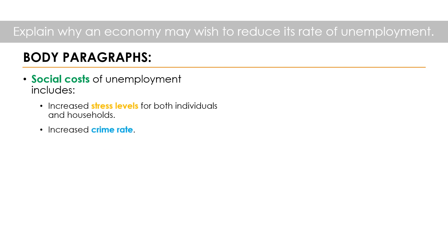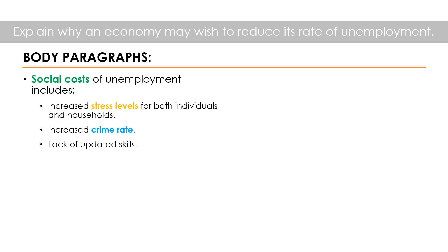A second social cost is an increase in crime rate. Given that a person or household has less income, they might resort to stealing to obtain finances. Thirdly, there will be a lack of updated skills: we are not fully utilizing human resources, and the person may not acquire the most updated skills. Skills already acquired may also decline over time because they have not been practiced due to unemployment. In this section, instead of an economic diagram, we can use real-life examples to support our points.